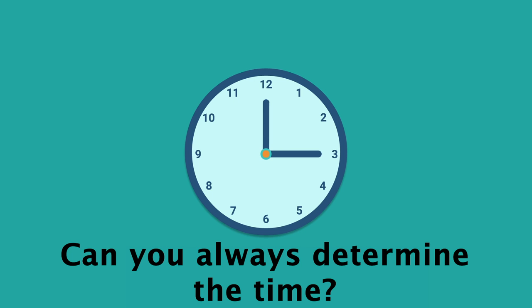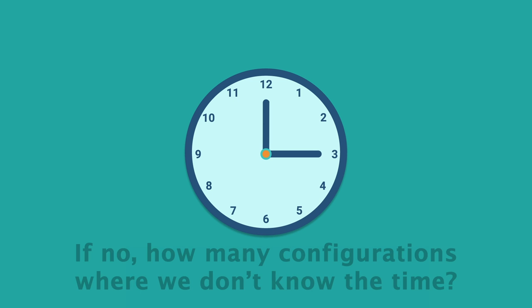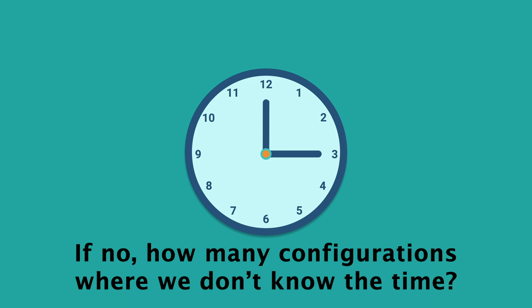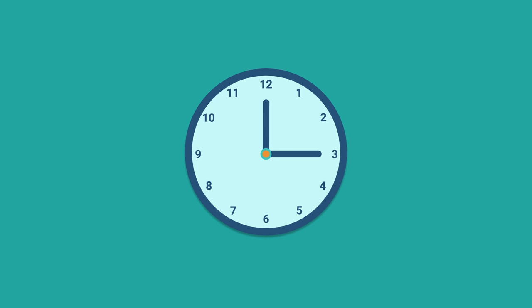And if the answer to this is no, then the next question would be, how many configurations are there where we can't determine the time? Because I mean right now, even though both hands look the same, I know it's three o'clock. Could be a.m. or p.m., but I know it's three and therefore this must be the hour hand.